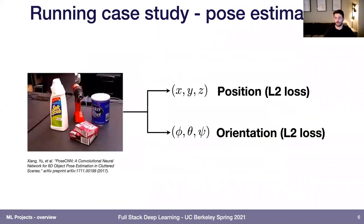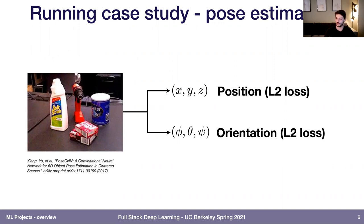Throughout today, we'll keep coming back to this running case study: pose estimation. This is inspired by a project I actually worked on at OpenAI. The idea is that we're a hypothetical robotics company, and what we're trying to do is predict the pose of objects from images of those objects. The input to our model is one or more images of some indoor scene the robot will interact with, and what we're trying to predict is the position and orientation of all the objects in that image.